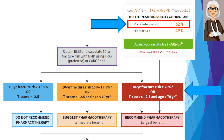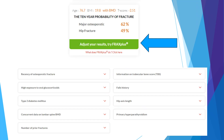We can take her 10-year fracture risk and apply it to the treatment algorithm of the Osteoporosis Canada guideline to help make treatment decisions, using the 10-year probability of major osteoporotic fracture. FRAX also offers the FRAX Plus tool, which can further adjust the FRAX calculation based on additional risk factors; however, there is a cost associated with FRAX Plus, whereas the standard FRAX calculation tool is free.